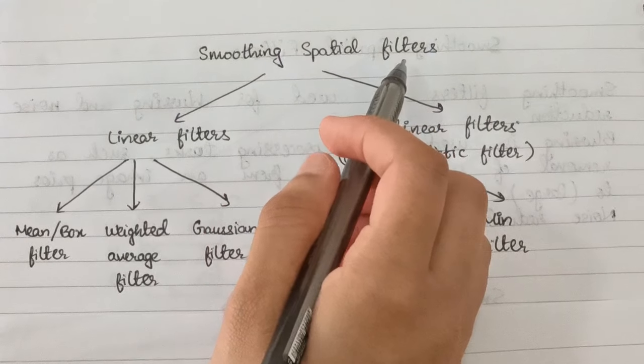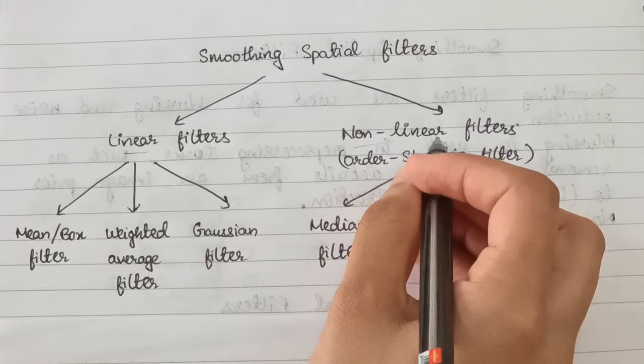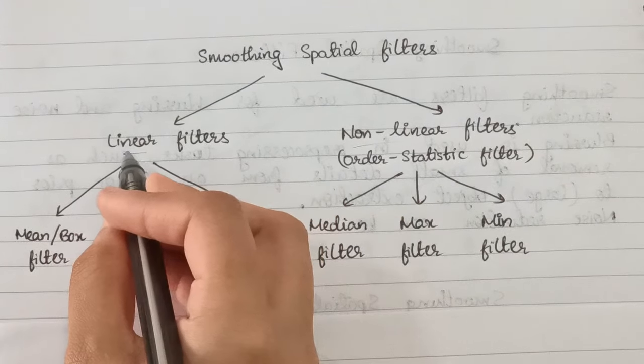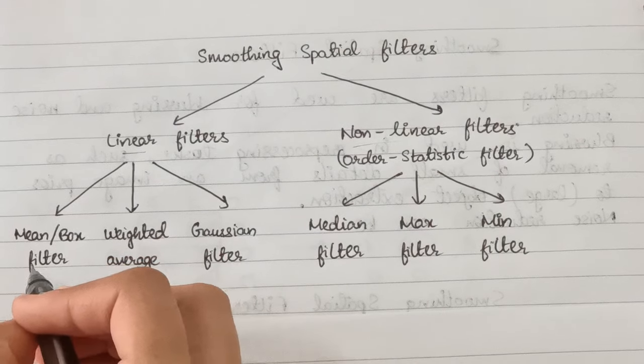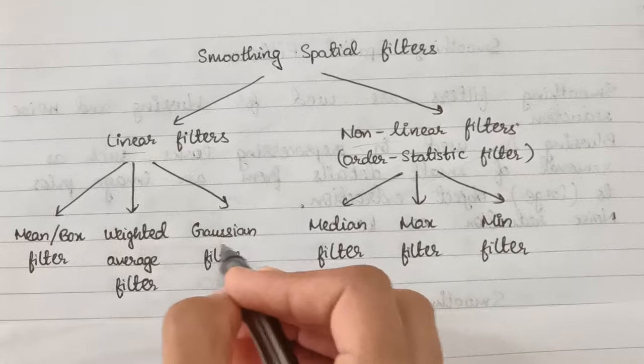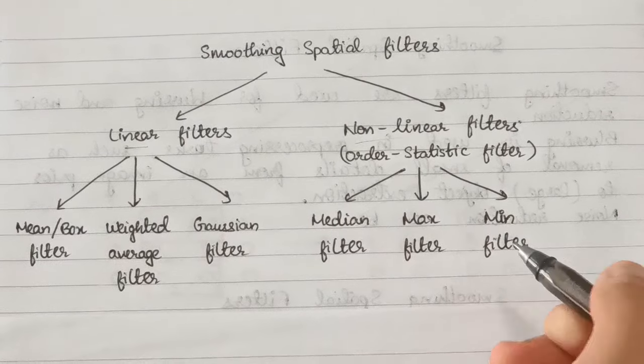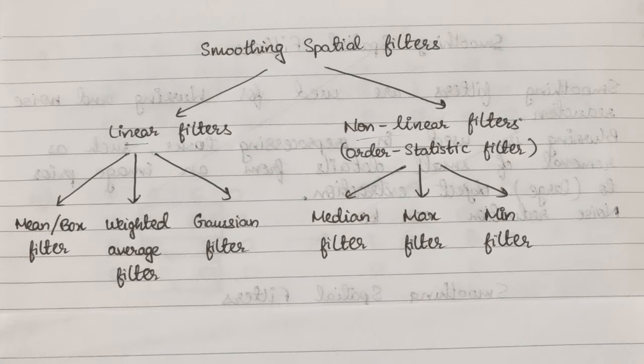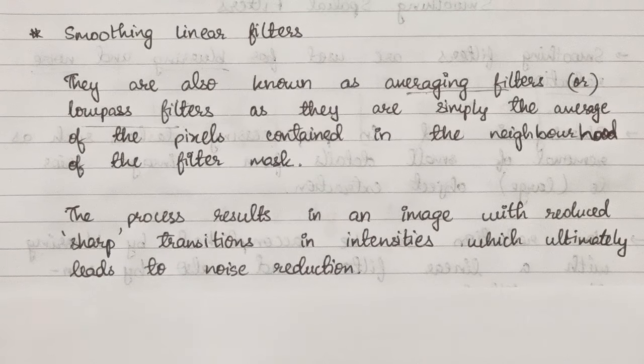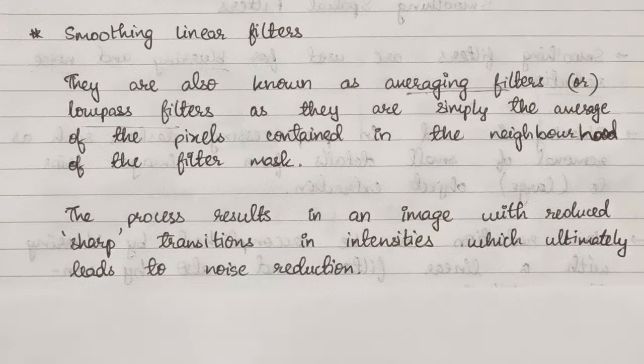We have smoothing spatial filters which are of two types: linear and nonlinear filters. Nonlinear are also known as order statistic filters. Under linear we have mean or box filters, weighted average filters, and Gaussian filters. Under nonlinear we have median, max, and min filters. Now we'll get into the details of these one by one, and at the end we'll do a question involving all of them.